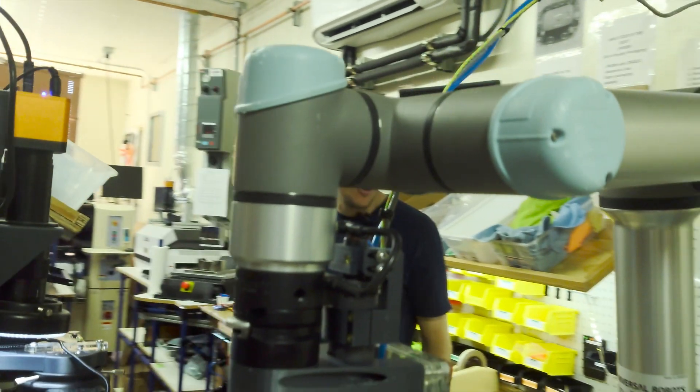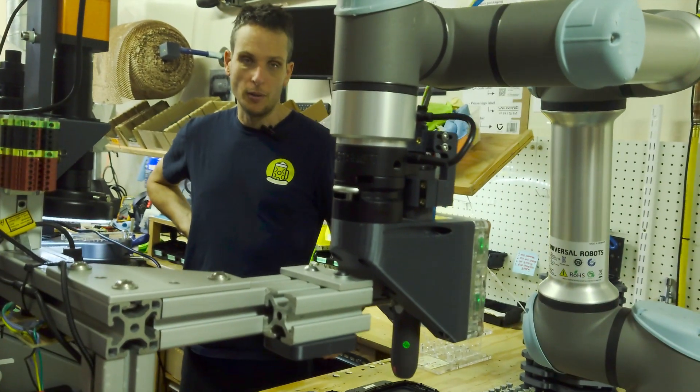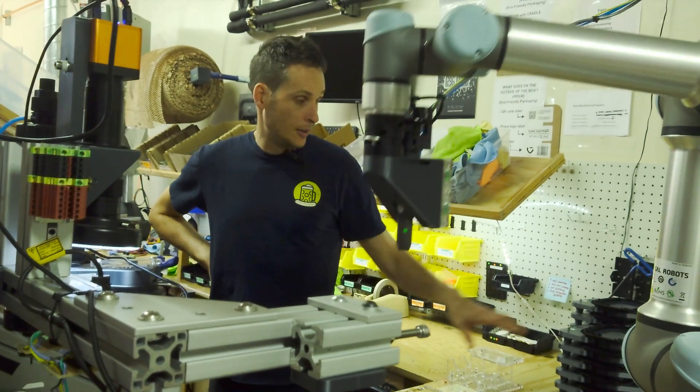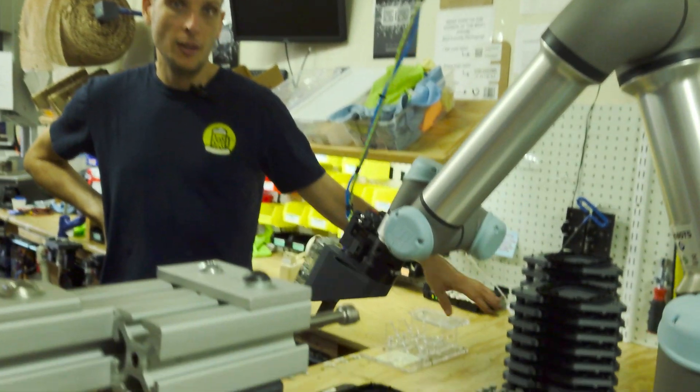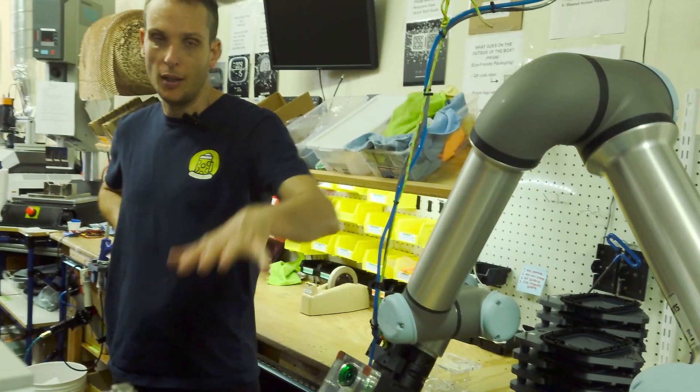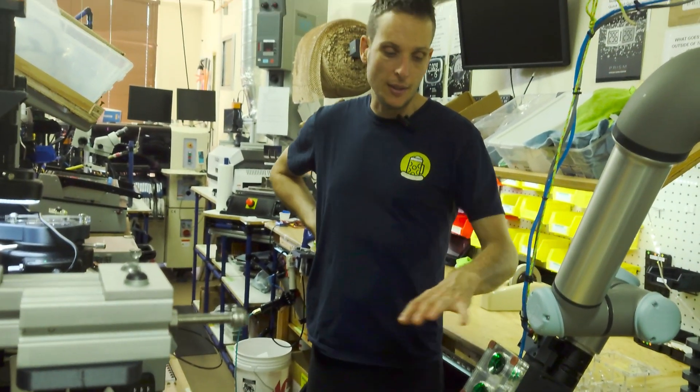So we're going to turn the Corona treater on. It's going to Corona treat this housing. And then it just keeps on looping until we get through all these plates over here. And so these stacks will get piled up over here. And then everything stays clamped overnight. In the morning we come in, take it apart, and we have the glued housings.